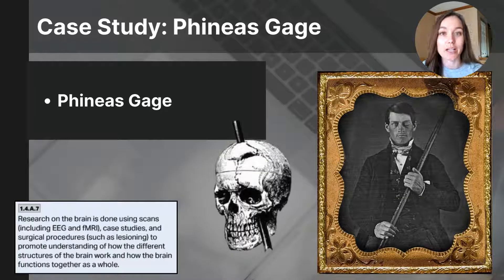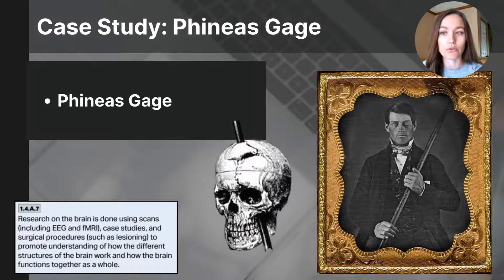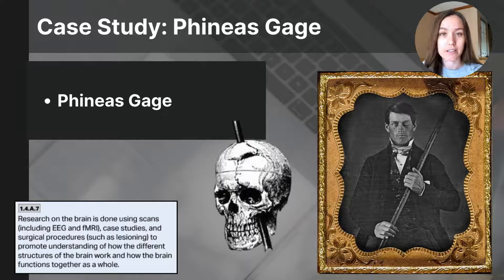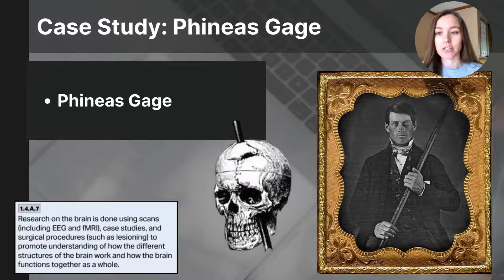Notice the blue text box at the bottom left-hand corner of the screen. This comes from the College Board for AP Psychology CED, which outlines what students should know for the course. This objective is 1.4A7. Students should know that research on the brain is done using scans — it lists EEG and fMRI — as well as case studies and surgical procedures such as lesioning, to promote understanding of how the different structures of the brain work and how the brain functions together as a whole.